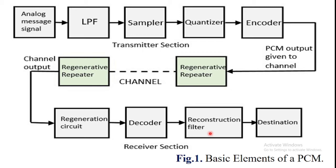The low-pass filter eliminates the high-frequency components present in the input analog signal — specifically components above the highest frequency of the message signal — in order to avoid aliasing of the message signal. That is the importance of the low-pass filter.